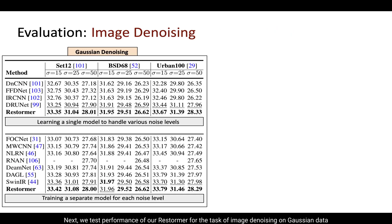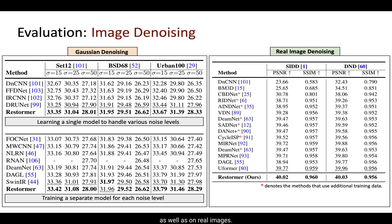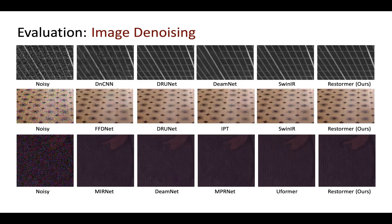Next, we test the performance of our Restormer for the task of image denoising on Gaussian data as well as on real images. Our method performs consistently well on different datasets under different noise settings. Here are denoising examples where our method restores clean images while better preserving image texture.